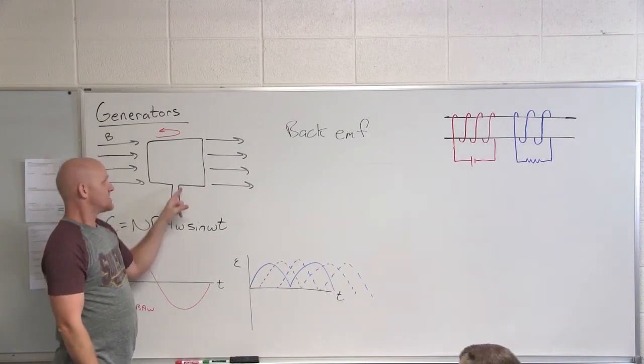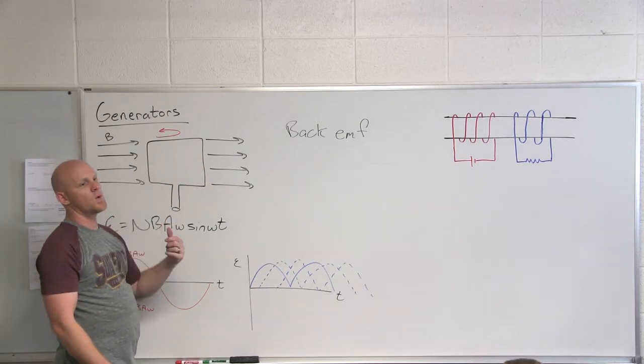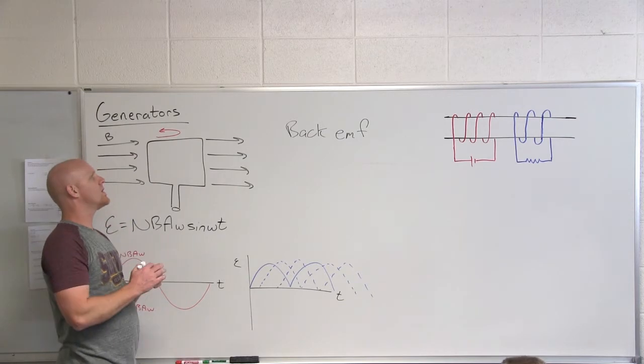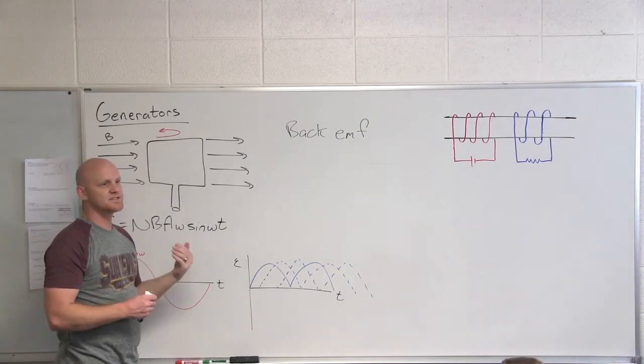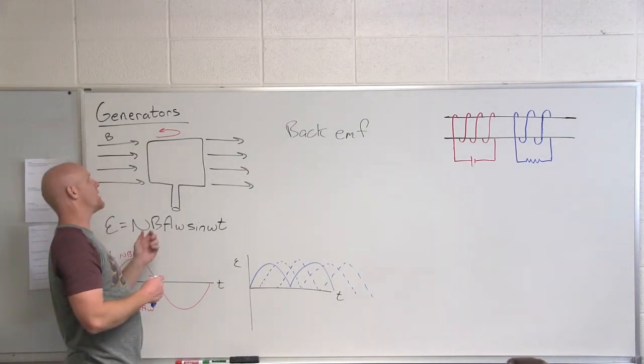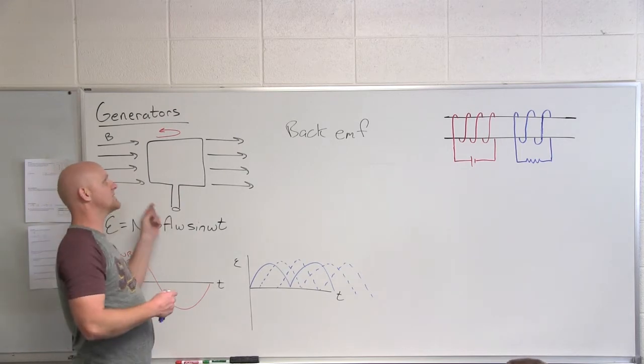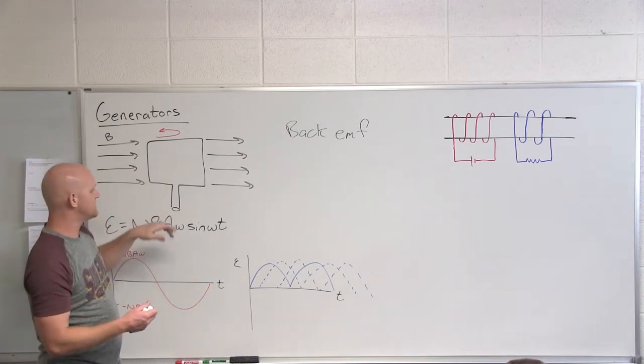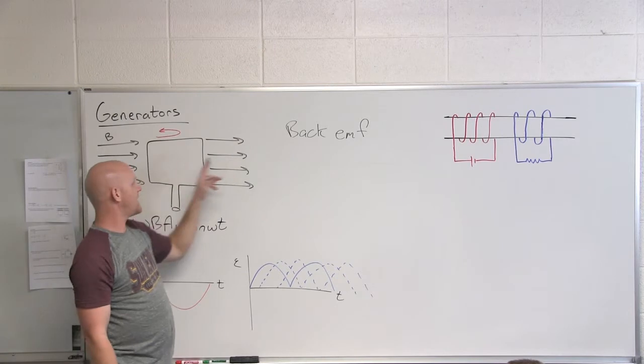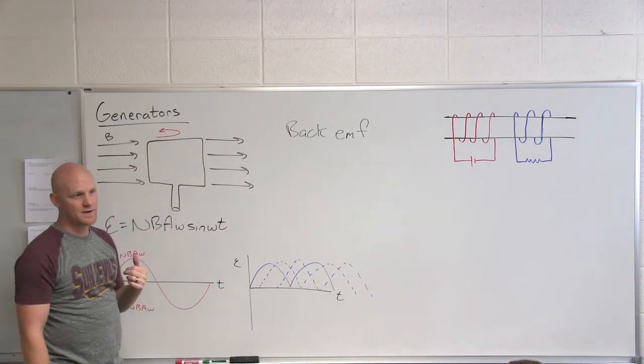But what you find is as this thing rotates, according to Lenz's law, it's going to want to create an opposition to the change in flux, and that's going to cause it to have an EMF in exactly the opposite direction. And so what you find out is that this back EMF, the faster you rotate this, the greater that back EMF is going to be.